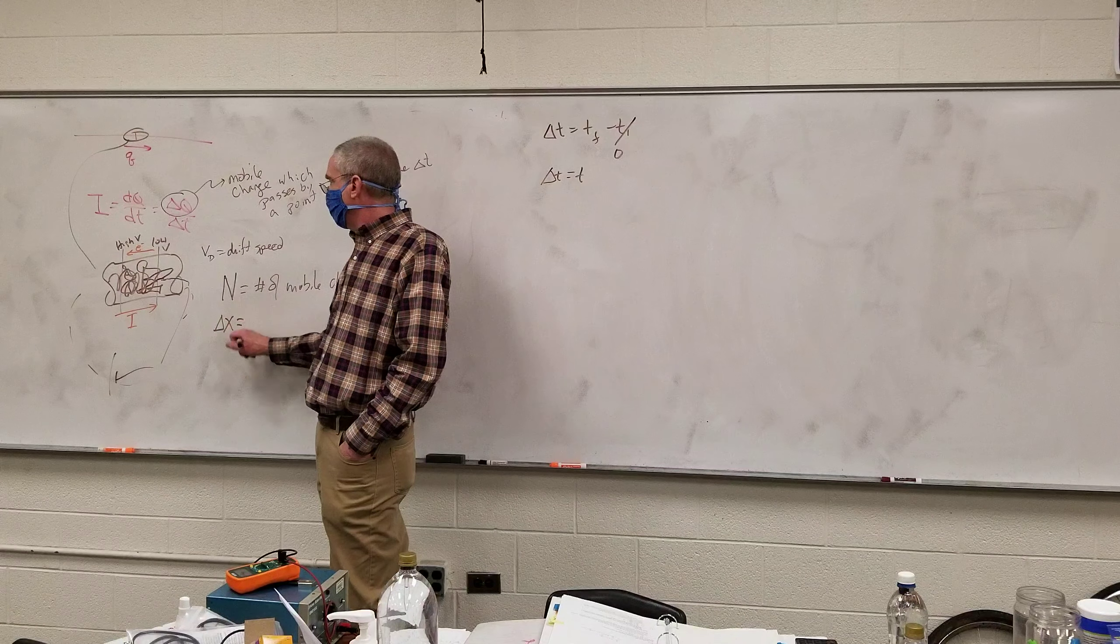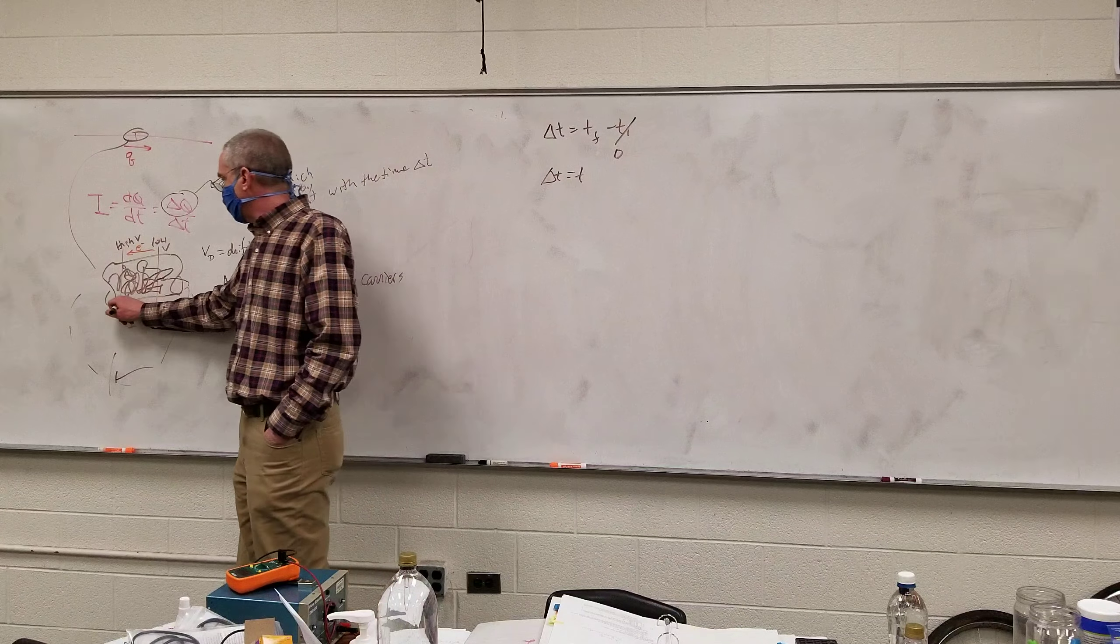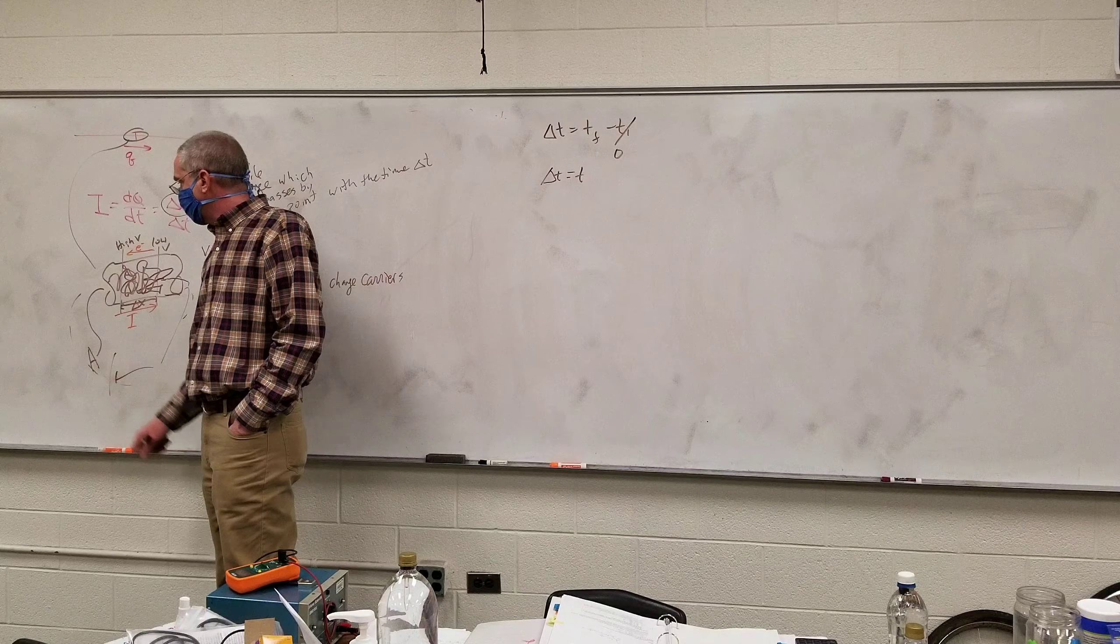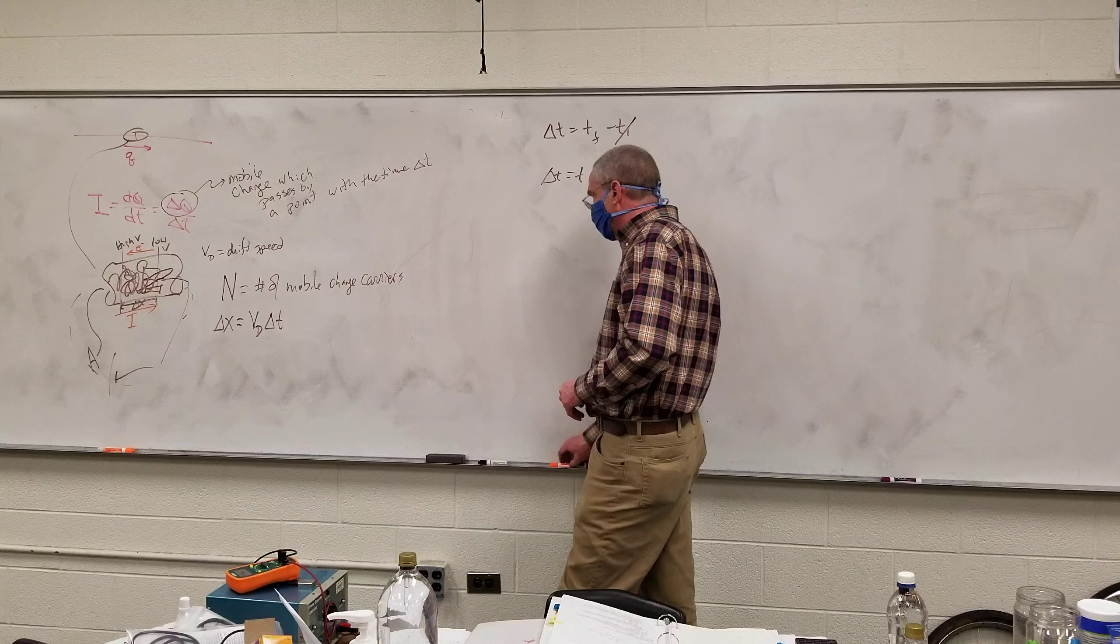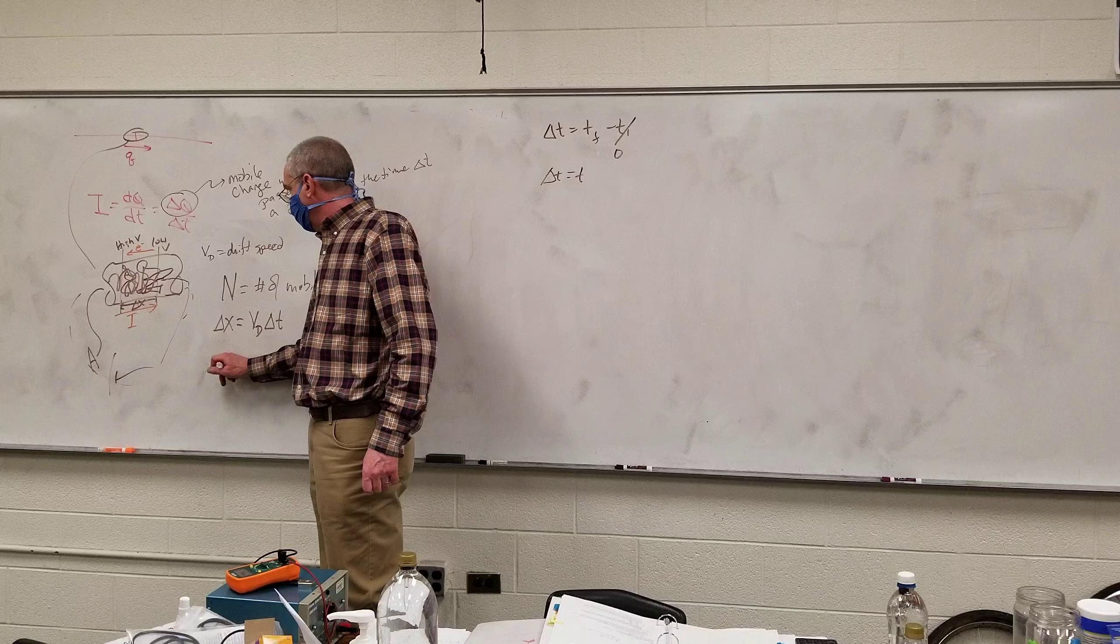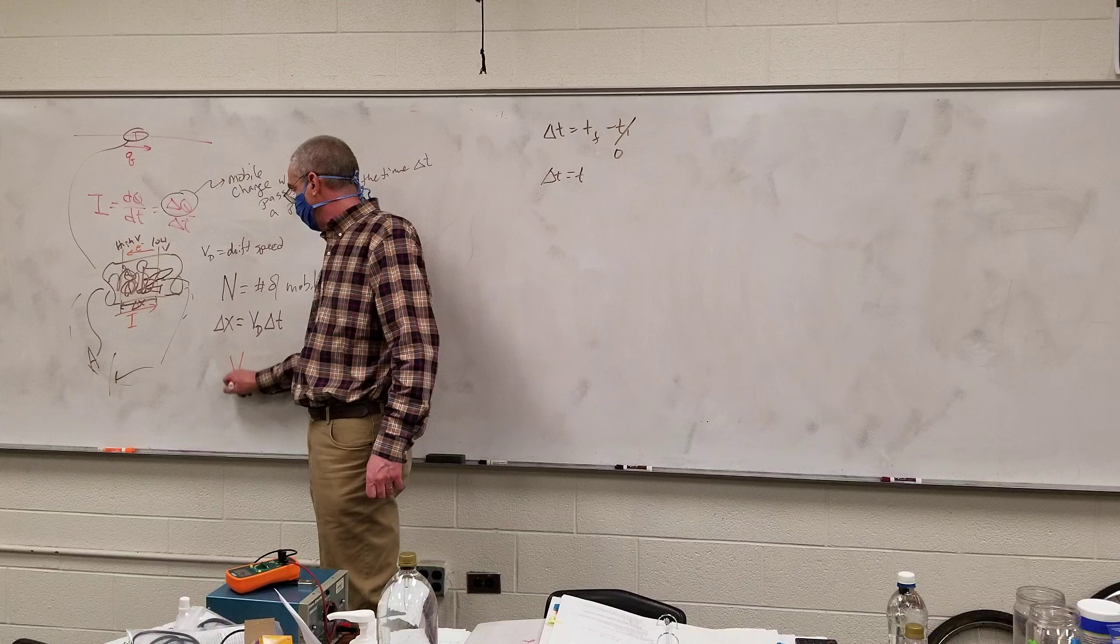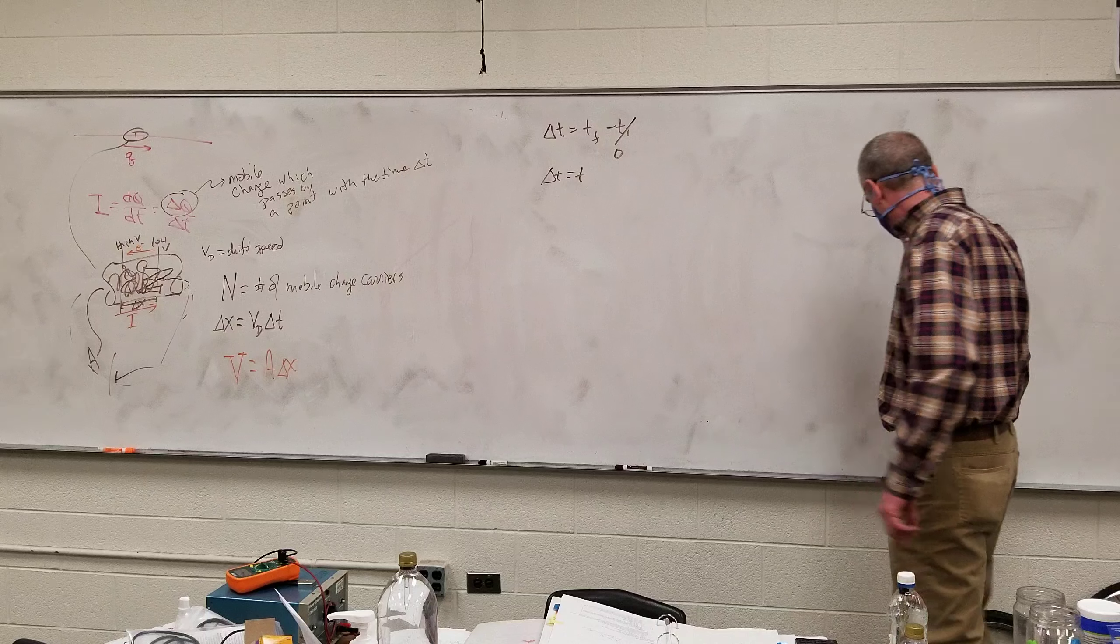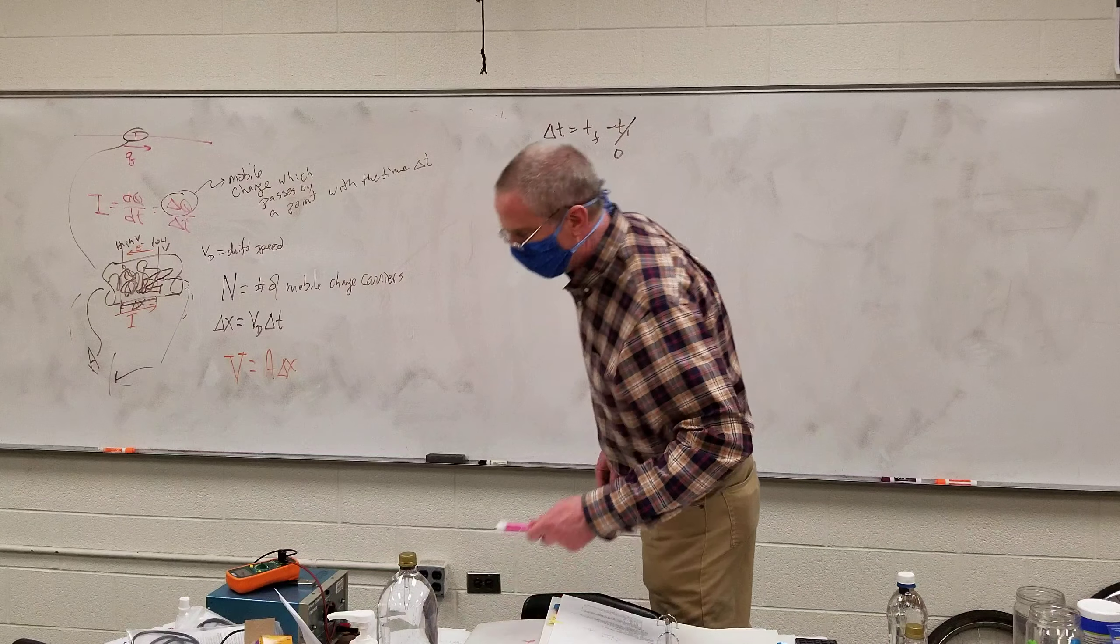I'm going to let capital N equal the number of mobile charge carriers that are passing through. Delta X is this distance from here to here. That is just how far the electrons, on average, will actually travel in the time t. In other words, it's just the drift speed times our time delta t. I'm going to let the cross-sectional area of the wire be A. And so my volume of this section that I'm looking at here is just A times delta X.